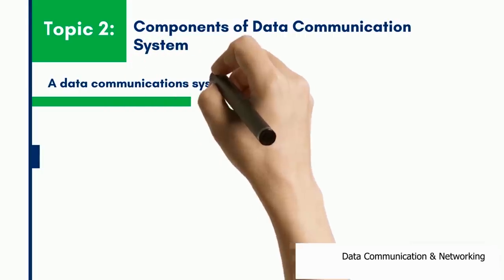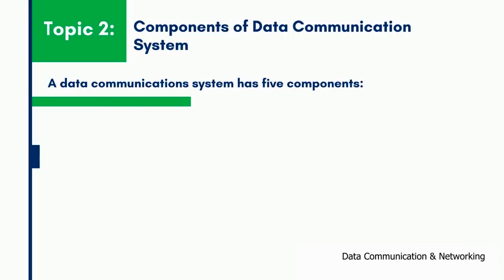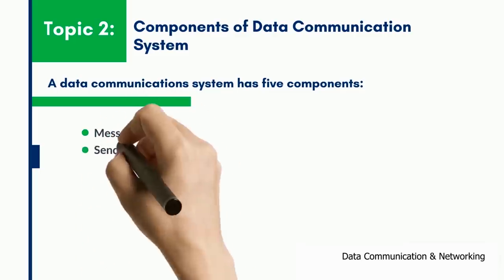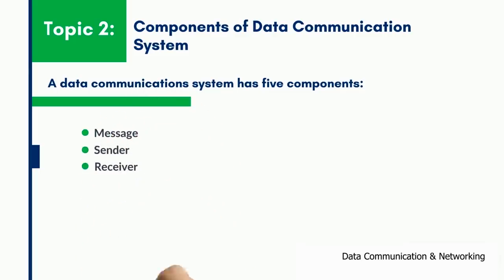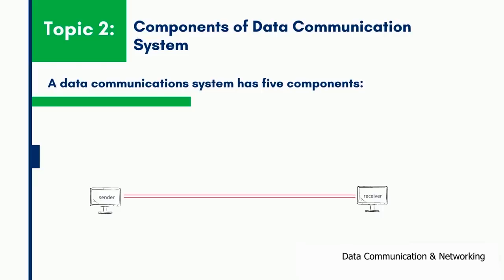Let us switch over to the second topic: components of a data communication system. A data communication system has majorly five components—message, sender, receiver, transmission medium, and protocols. The sender is a device that sends the data message and the receiver is the device that receives the data message. Both devices are connected through a transmission medium which is the physical path by which a message travels from sender to receiver. Both devices, upon an agreement, follow a set of rules that governs the data communication, which is also known as protocols.